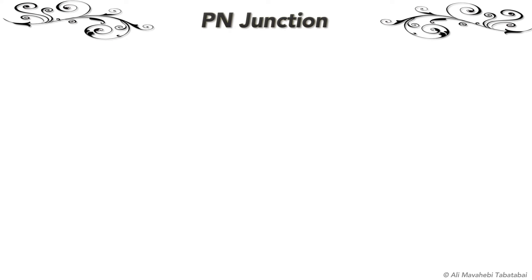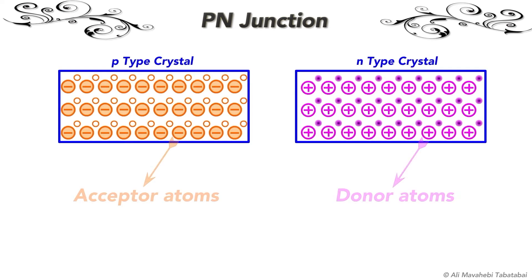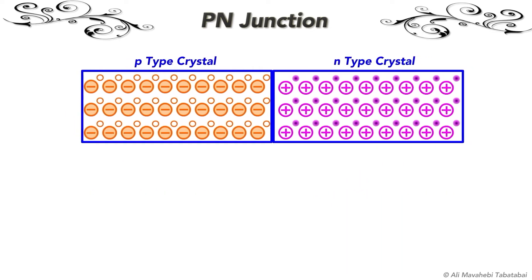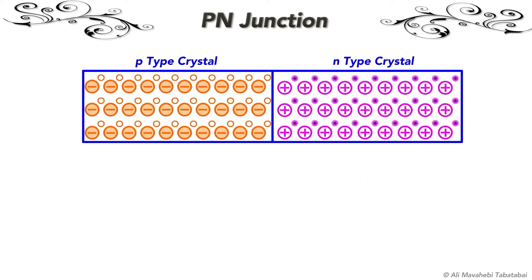Now that we have separately studied n-type and p-type semiconductors, it is time to join a piece of p-type semiconductor to an n-type semiconductor such that the crystal structure remains continuous at the boundary. The contact surface is called the p-n junction. The p-n junction is of great importance as it is the control element for solid-state devices.